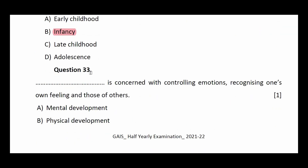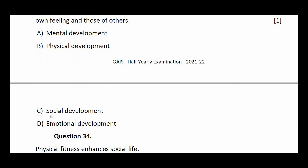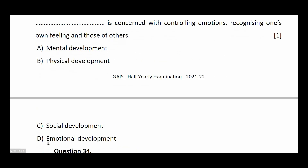Question number thirty-three: blank is concerned with controlling emotions and recognizing one's own feelings and those of others. Options: mental development, physical development, social development, emotional development. The answer is emotional development.